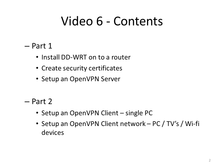Part 1 of video 6 talks about how to install DDWRT on your router, including important information about making sure your router memory is big enough to run VPN as a server. We also talk about how to create security certificates — the encryption keys required when you set up an OpenVPN style server. Part 2 of the video talks about how to set up an OpenVPN client on a single PC, and also how to set up an OpenVPN client network so you can connect your PC, TV, and WiFi devices to it using a DDWRT router as a client. You need to set the server up first in part 1 in order to be able to set up the clients in part 2.